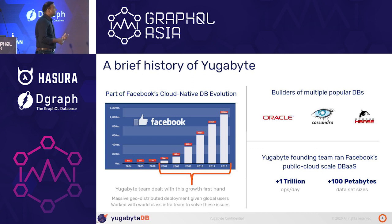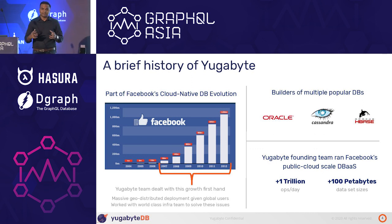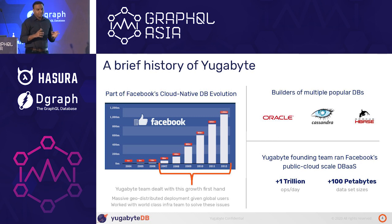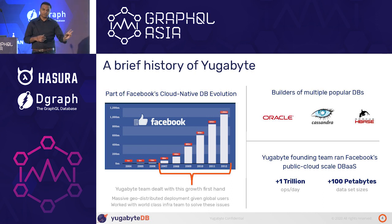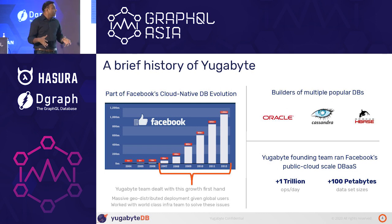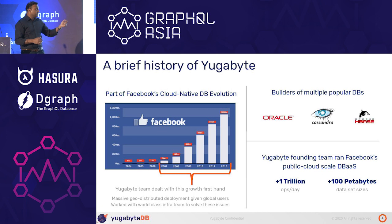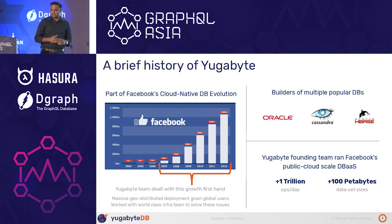A brief history about YugaByte. YugaByte's roots are in Facebook, just like GraphQL. The founding team at YugaByte basically handled all the data engineering efforts behind Facebook Messenger and the Facebook Wall projects. In this process, they ended up developing a bunch of open source databases — like Cassandra. Cassandra was actually coined as a term by one of our co-founders, Karthik.